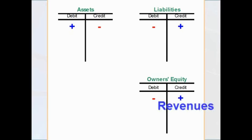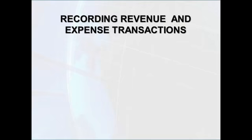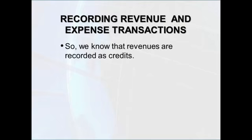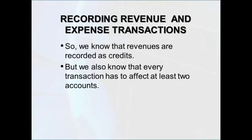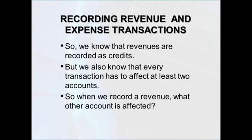Anything that increases owner's equity we record with a credit. Consequently, we're going to record revenues as a credit. Now we've figured out that revenues should be recorded as credits, but we also know that every transaction has to affect at least two accounts. So when we record a revenue, we're also going to have to record an entry to another account. What account is that going to be?